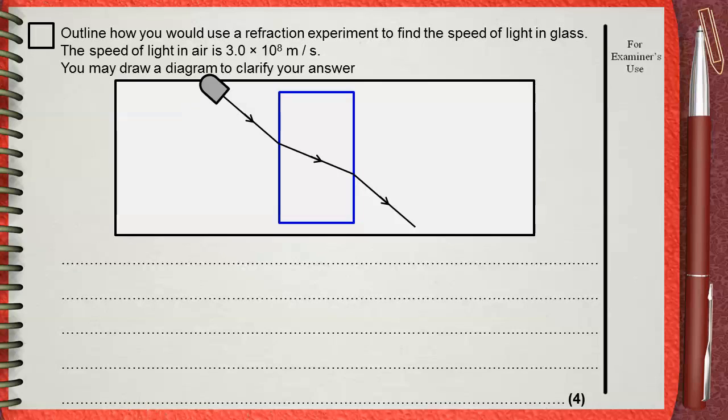And then away from the normal as it leaves the glass block. These are the positions of the pins. This is the normal. Then identify both the angle of incidence, which is the angle in air, and the angle of refraction, which is the angle in medium.